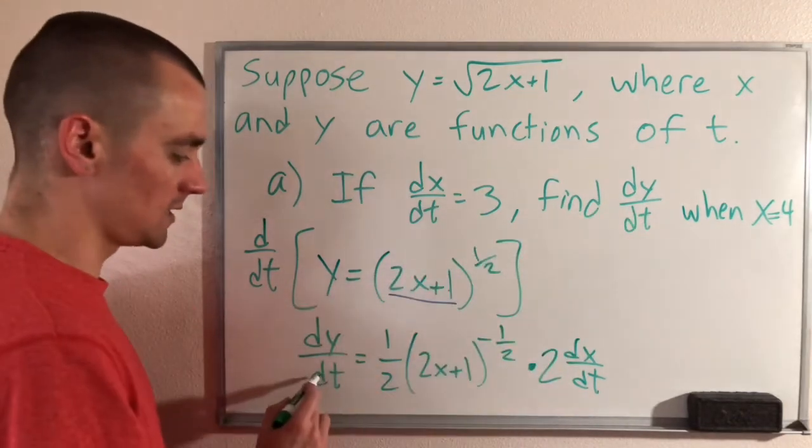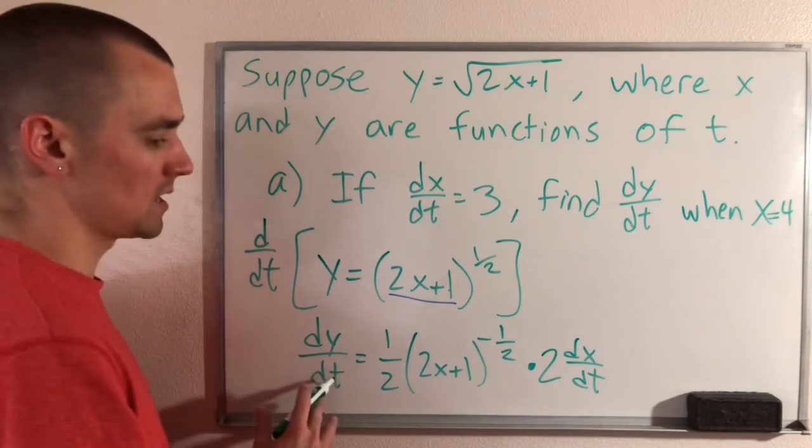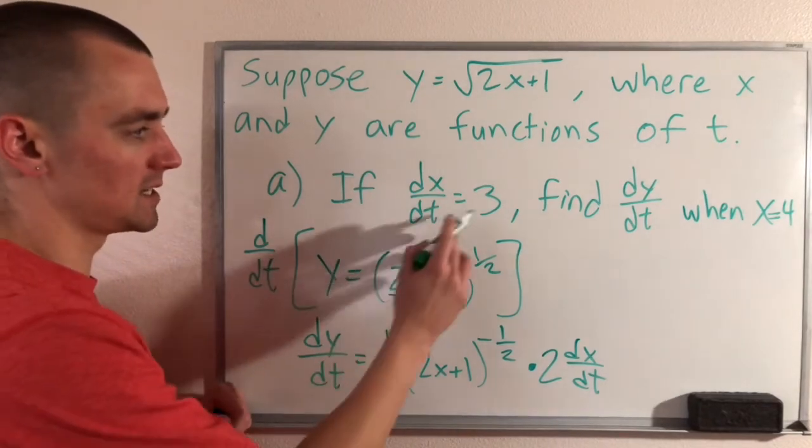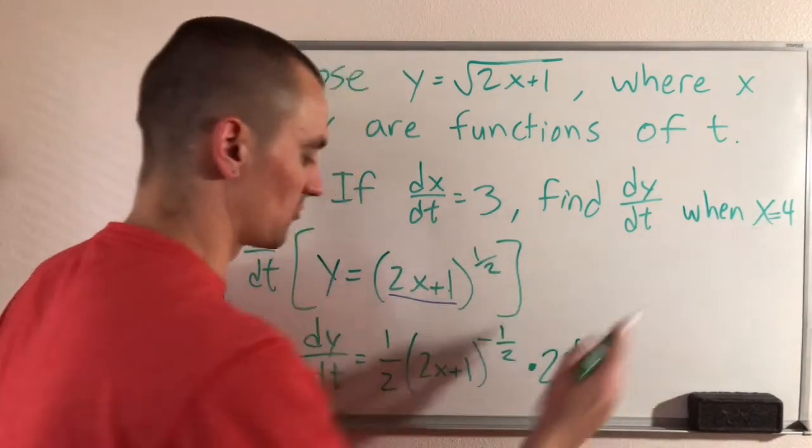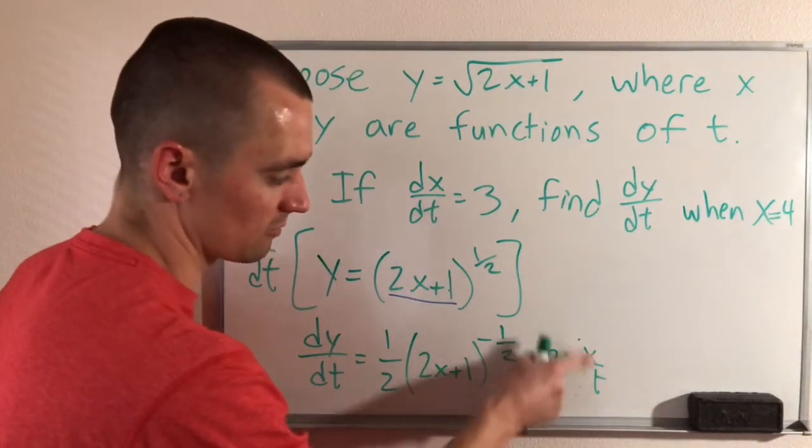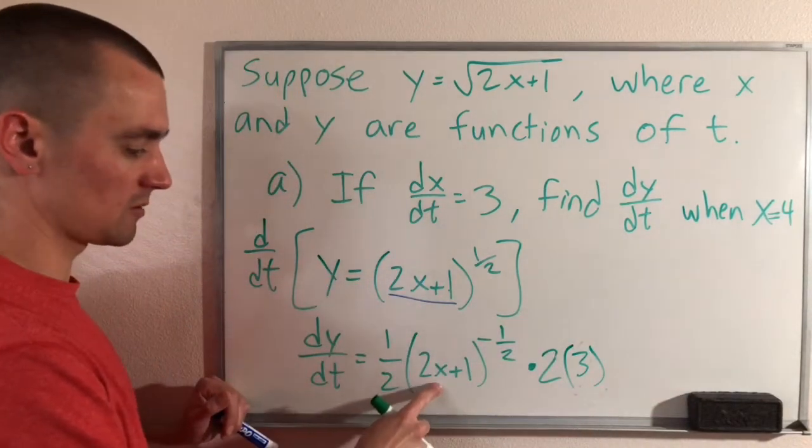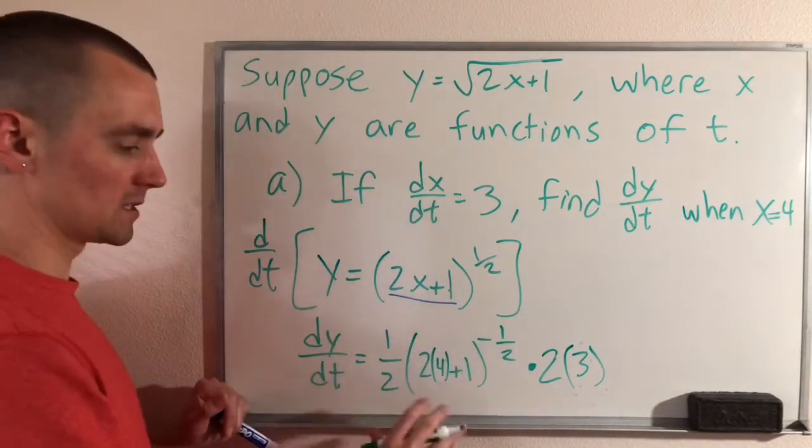We need to find dy/dt, which is already isolated. So that makes things a little easier. And we also know that dx/dt is 3 and x is 4. So we can basically just plug in 3 for dx/dt and we can plug in 4 for x. And then we can simplify that.